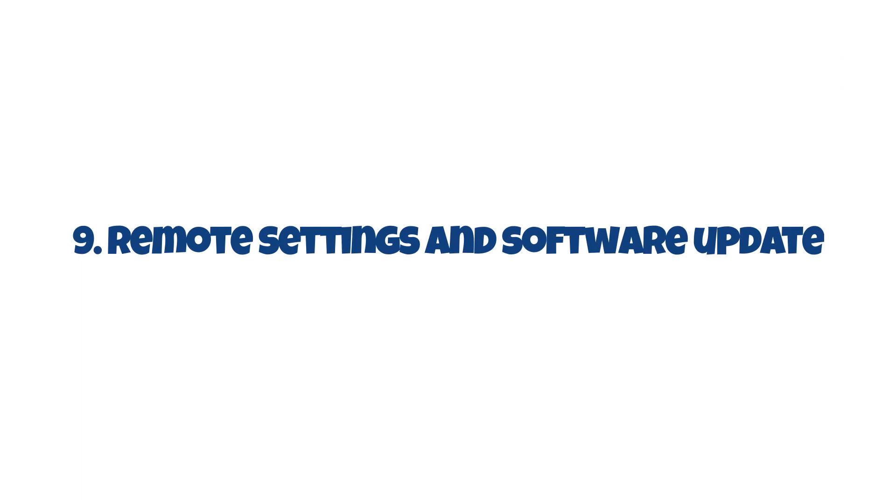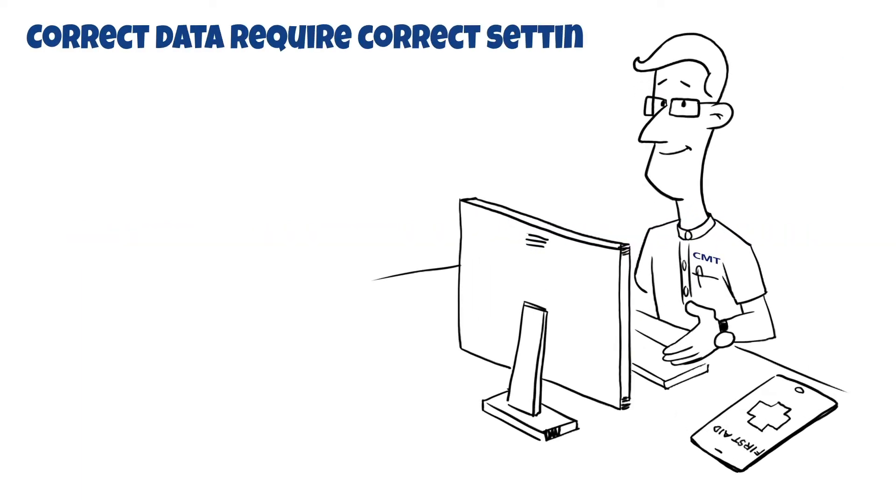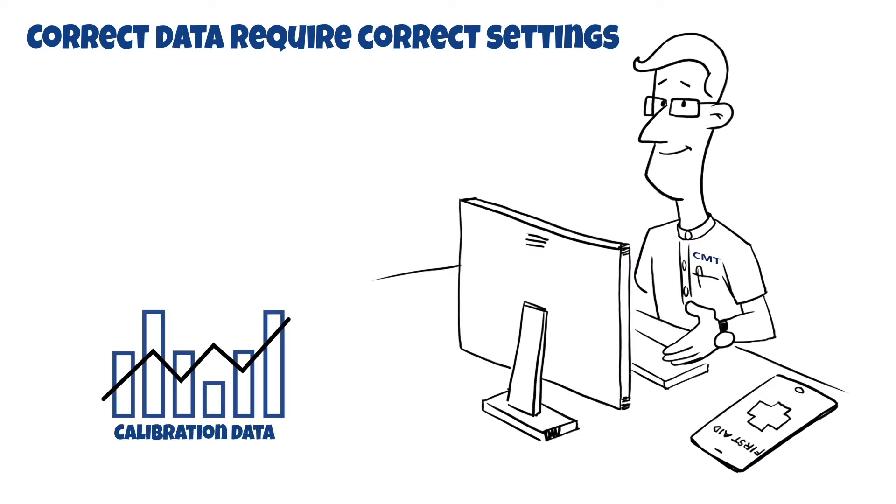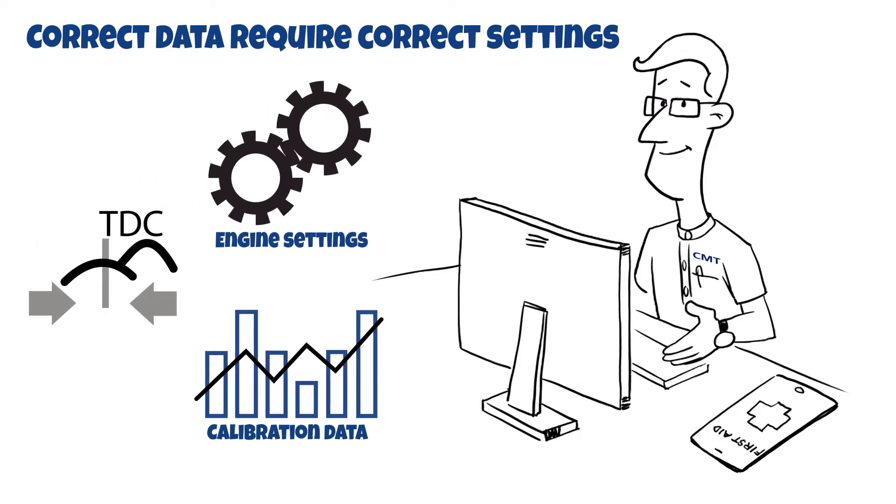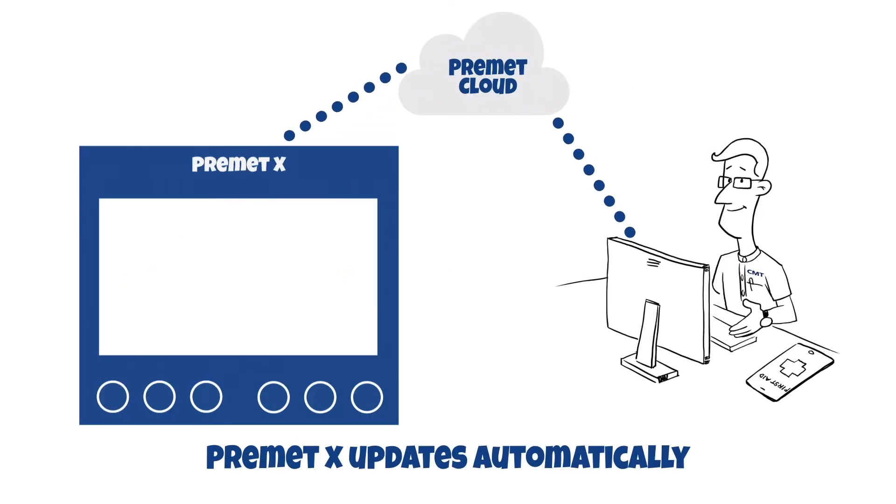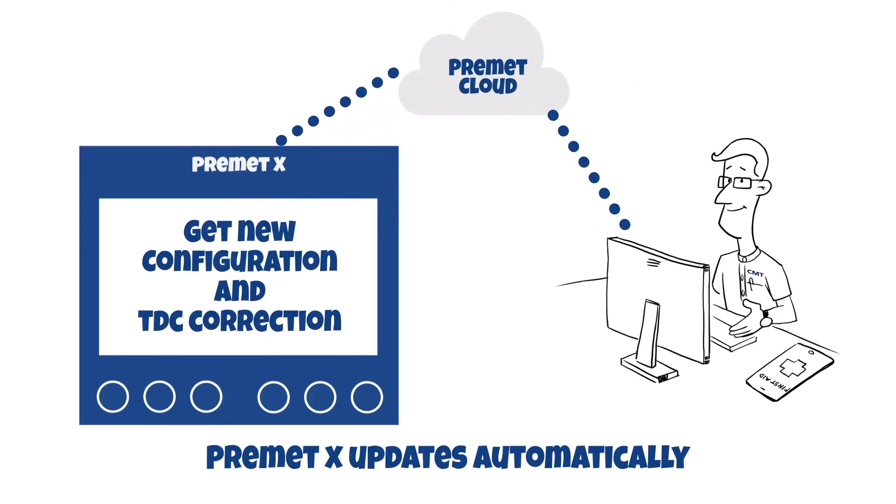Remote settings and software update. Correct data require correct settings in your device. This applies for calibration data of the device itself as well as for the engine settings. Also, the TDC correction often turns out to be a challenge. All settings can be done remotely.